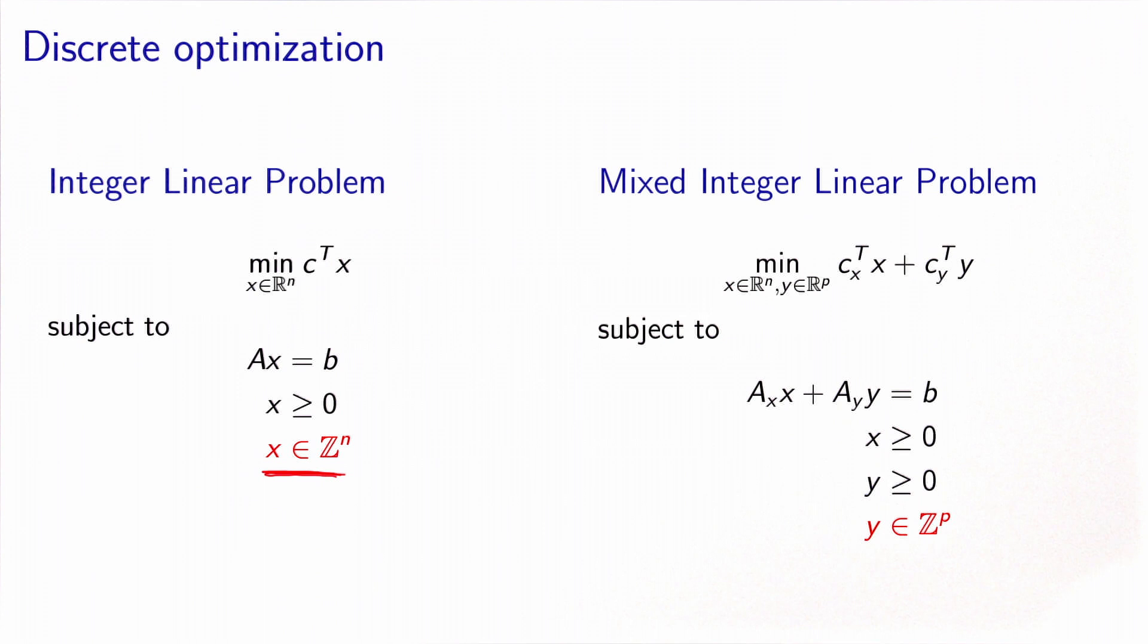This integer linear problem will be called mixed if some variables can take real values, in this case the variable x, and some variable must take integer values, in this example y.